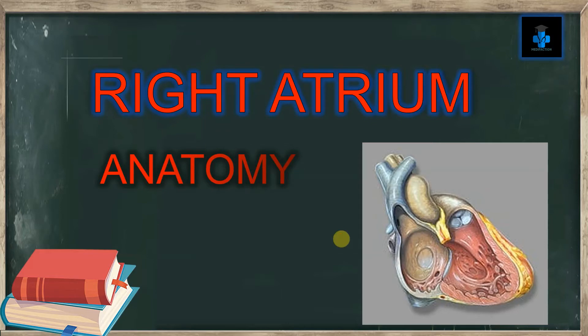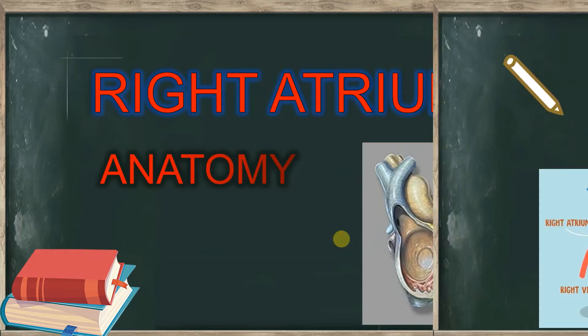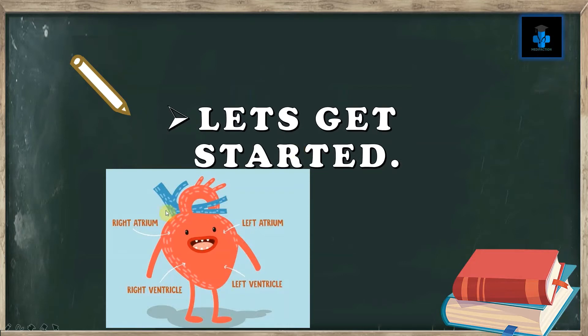Welcome to Medifaction. Today we will learn about the anatomy of the right atrium of the human heart. The word atrium means it is the upper chamber of the heart through which blood enters the ventricles. There are two atria in the human heart. The left atrium receives blood from the pulmonary or lung circulation, and the right atrium receives blood from the vena cava or venous circulation.